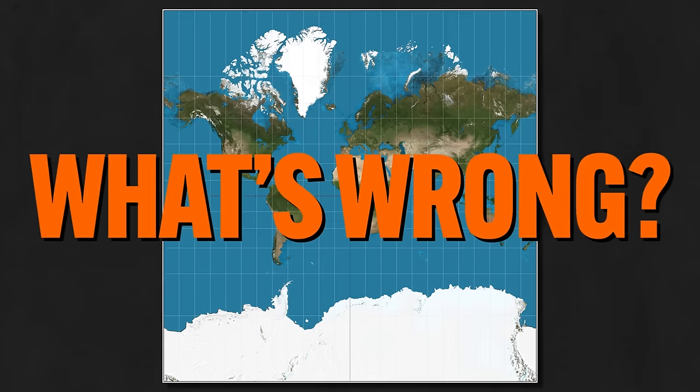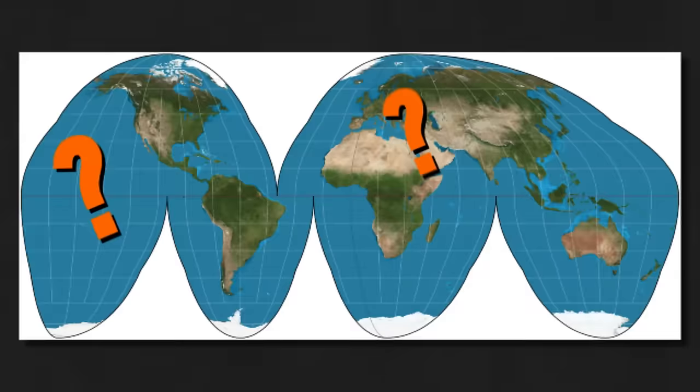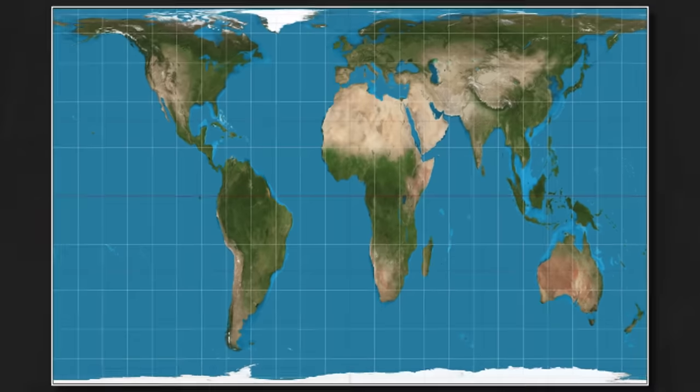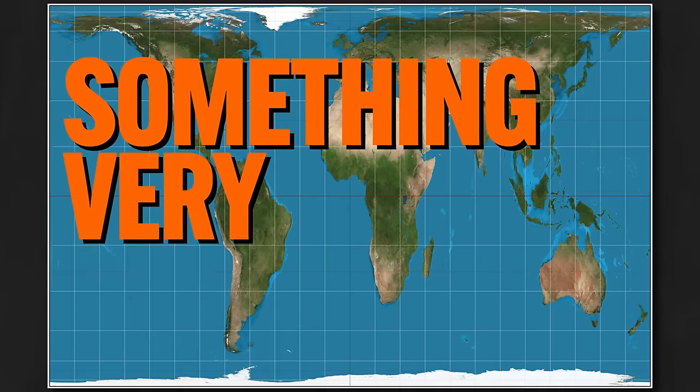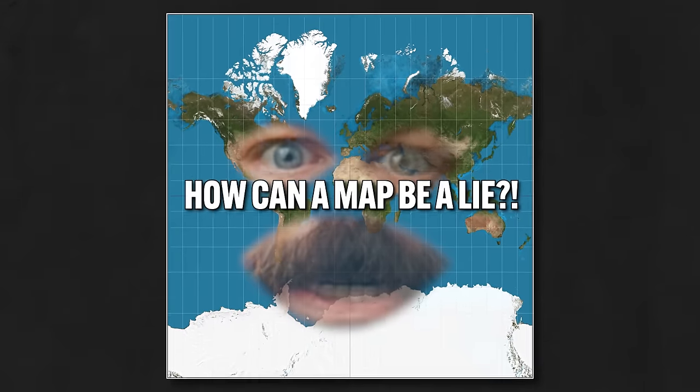Look at this map and tell me if you can see what's wrong with it. Do you see it? Okay, try this map. What's wrong with this one? Well, here's another, and it also has something very wrong about it. In fact, I'll go one step further and say it: every one of these maps is a lie. How can a map be a lie?